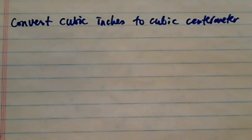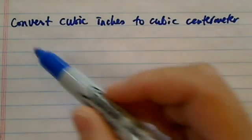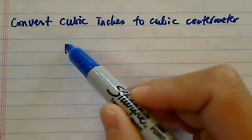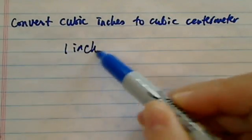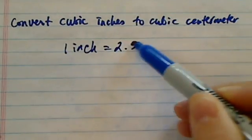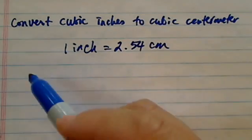To convert cubic inches to cubic centimeters, if you follow systematically, it should be an easy problem to do. One inch is 2.54 centimeters. So what you need to do is this.